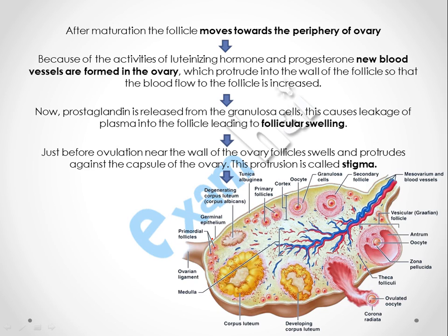First, we will understand where the ovum actually comes from. In the ovary, there is germinal epithelium and primordial follicles. These primordial follicles mature gradually in a step-by-step process — first converting into granulosa cells. Inside the granulosa cell, an oocyte is present, which is the female gametocyte. After maturation, the follicle moves towards the periphery of the ovary.